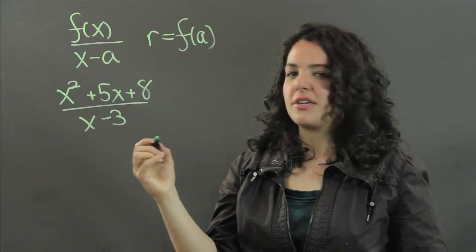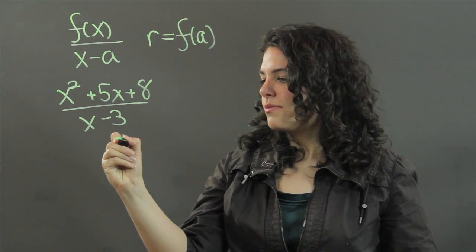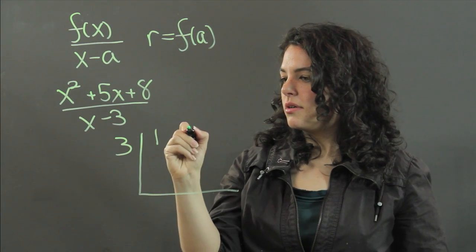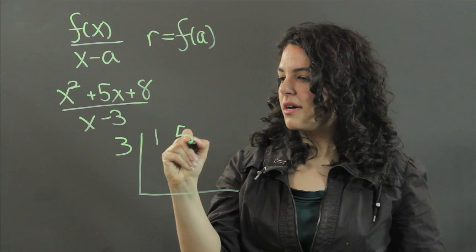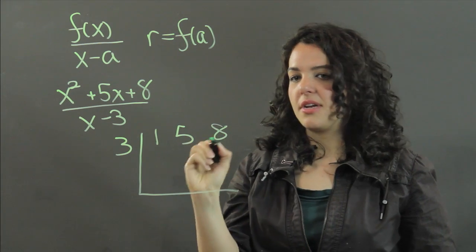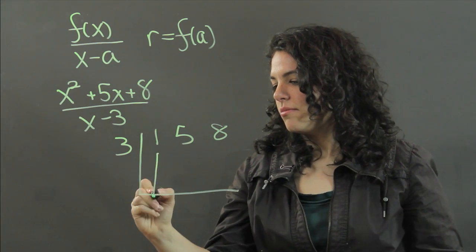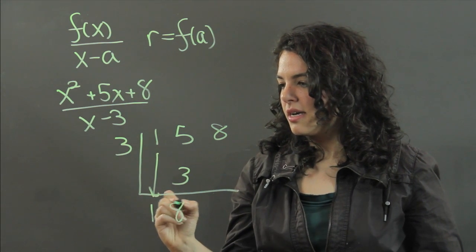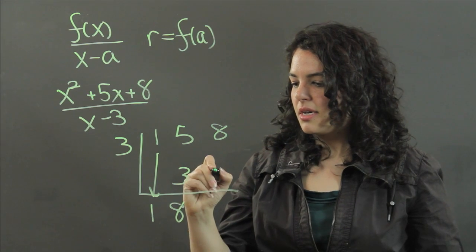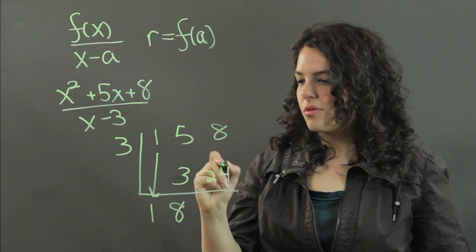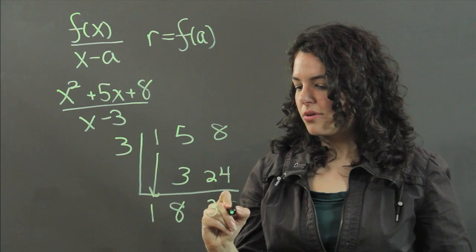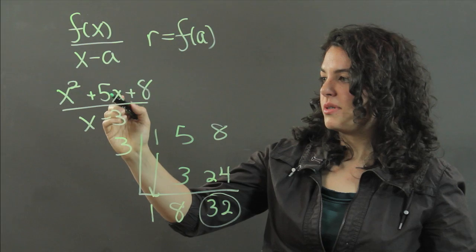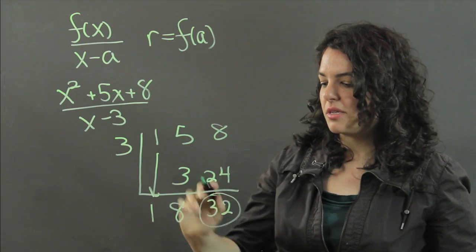I'm going to use synthetic division because that's a lot faster. We have 1, this is 5 here, and then we have an 8 here. Bring down the 1, 3 times 1 is 3, add them, I get 8. 3 times 8 is 24, I add these and I get 32. This here is my remainder from dividing x squared plus 5x plus 8 by x minus 3.